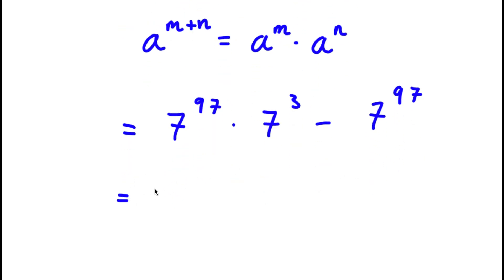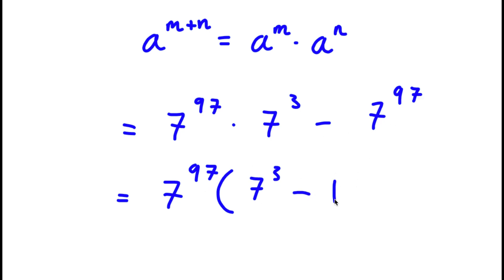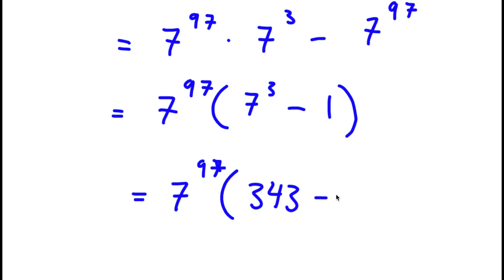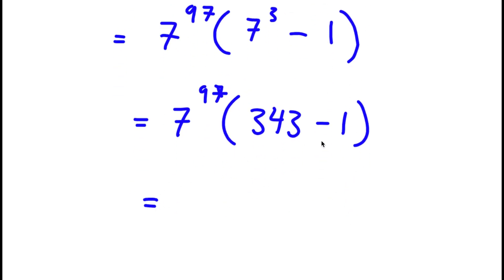Now from here, if I factor out 7 to the power of 97, I get 7 to the power of 97 times 7 to the power of 3 minus 1. Now 7 to the power of 3 is equal to 343, so times 343 minus 1. Now 343 minus 1 is 342, so my answer is 342 times 7 to the power of 97.